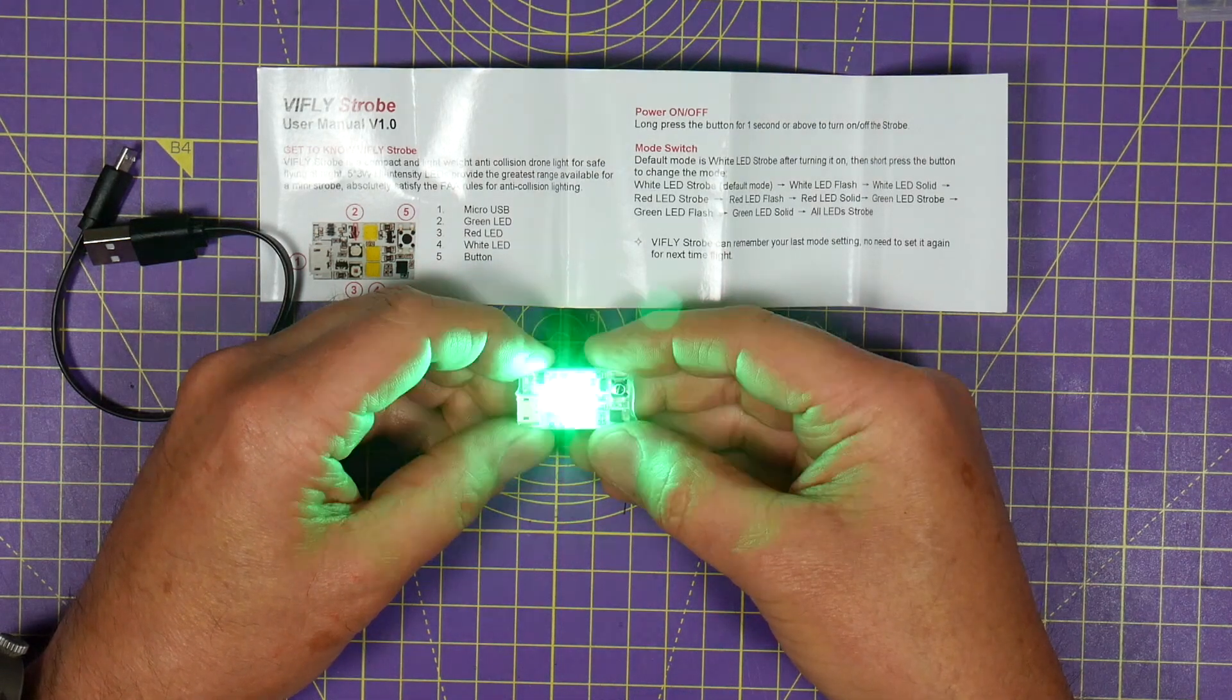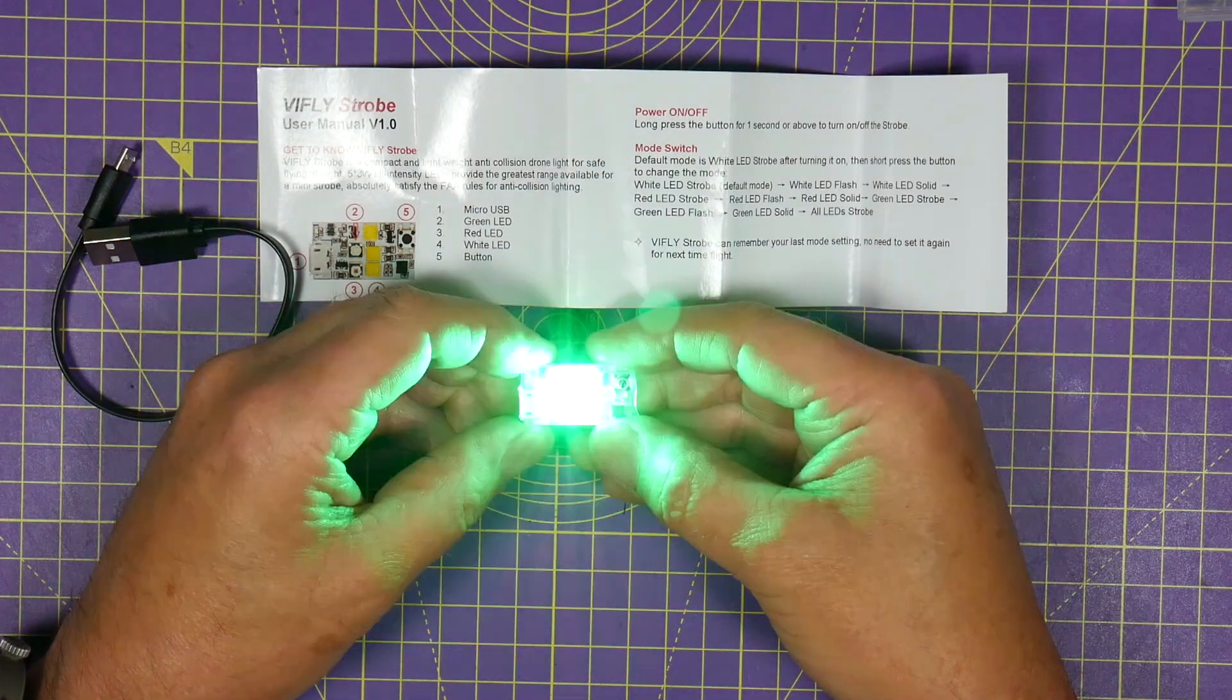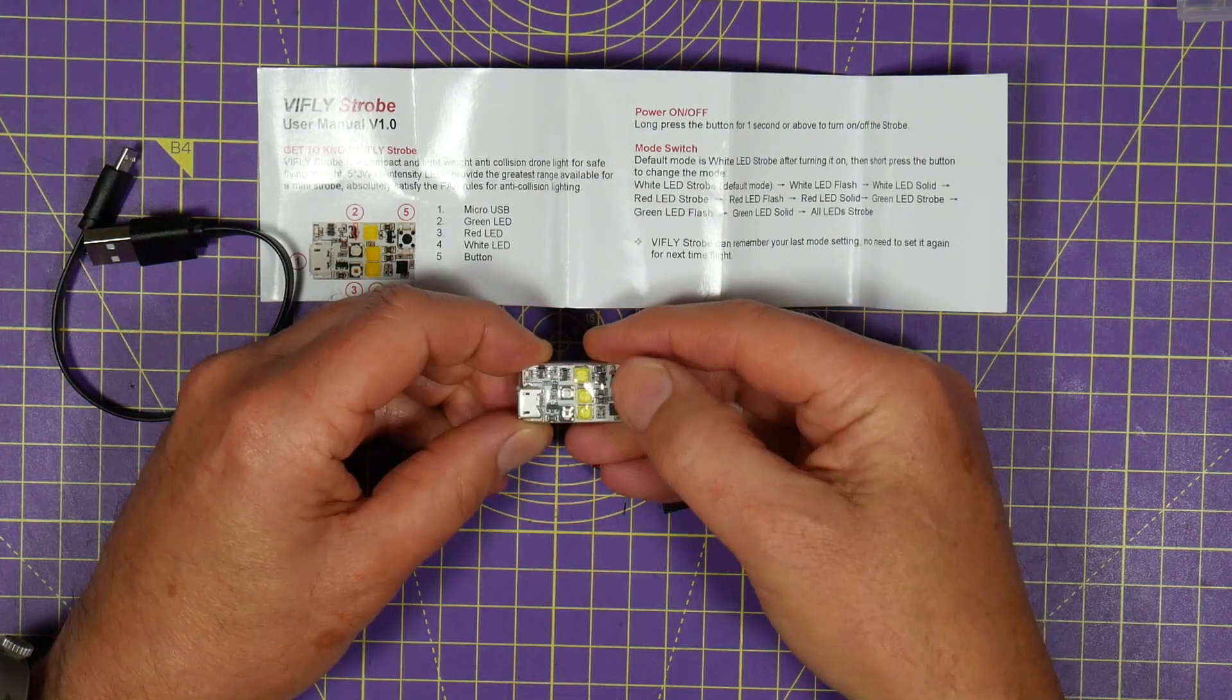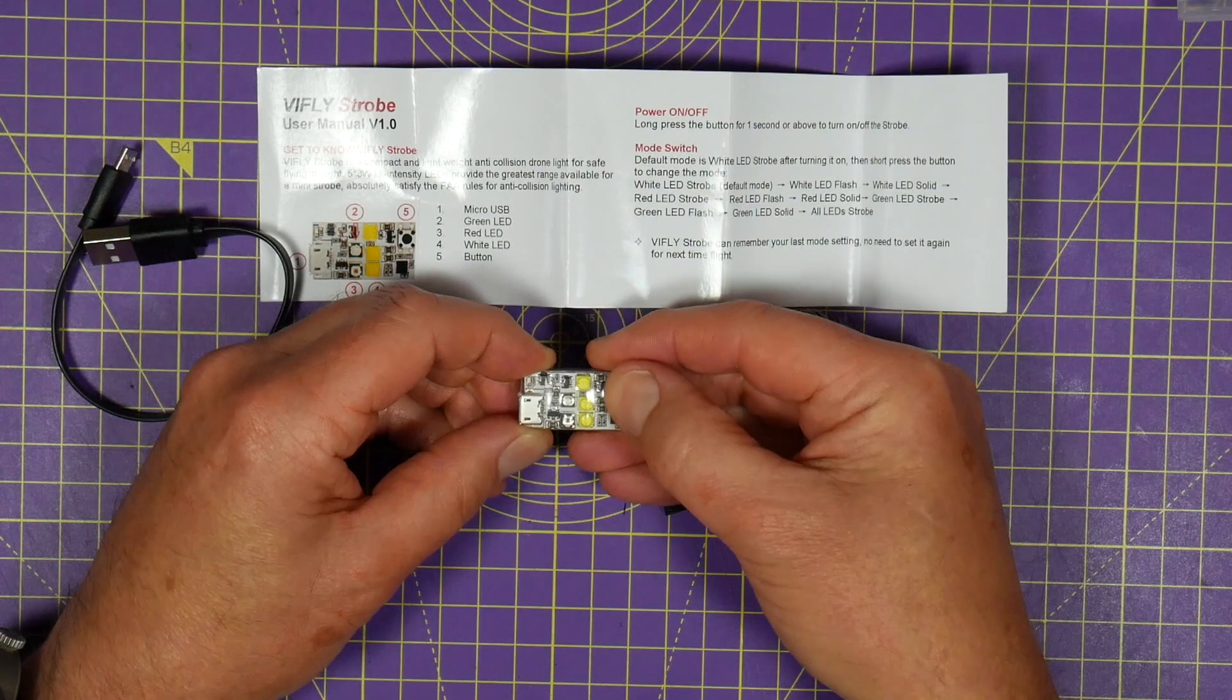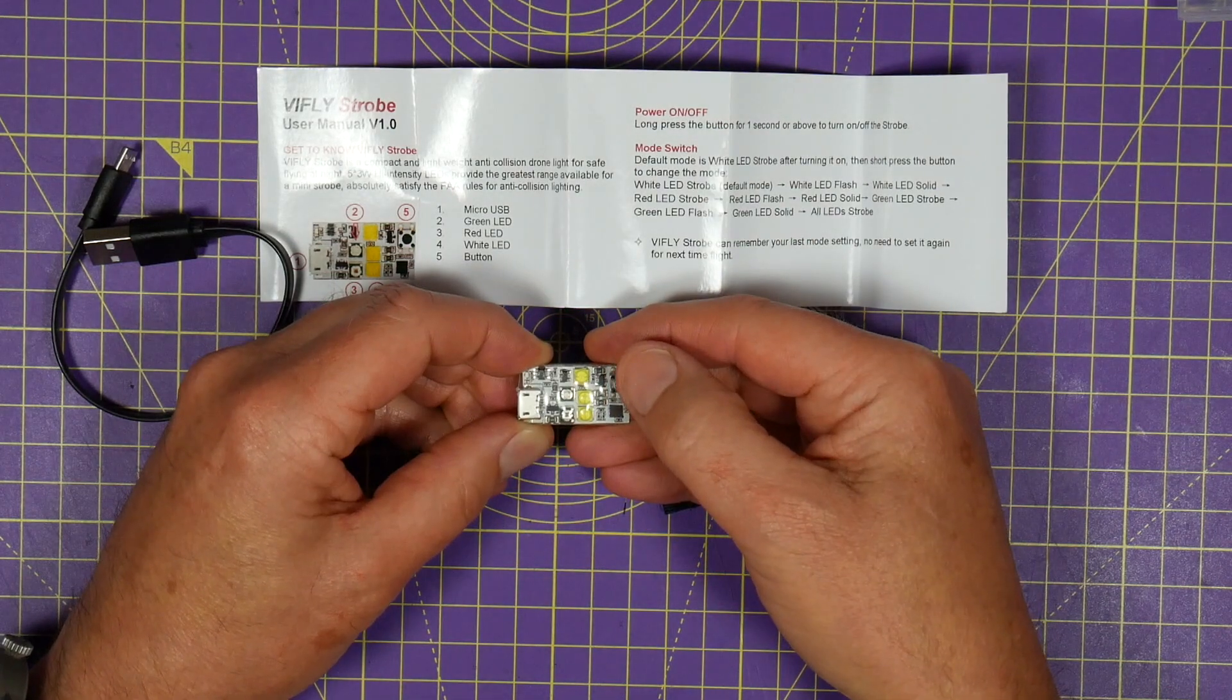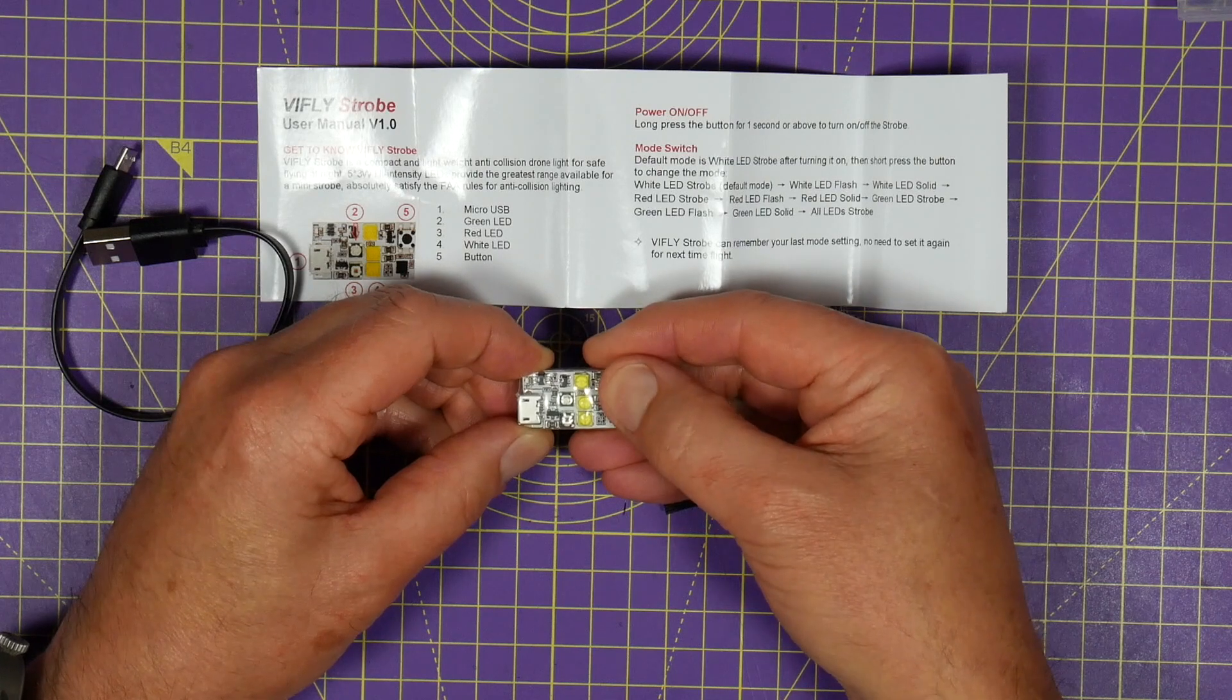Press it again we've got flashing green, I've seen spots in front of my eyes. Press it again we've got slow flashing green, can't even look at this. Press it again we've got a solid green and we're back to where we started. You just long press the button to turn it off.